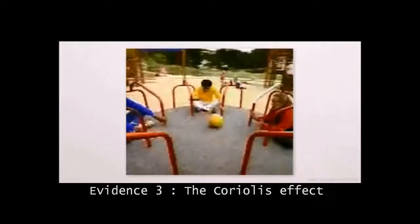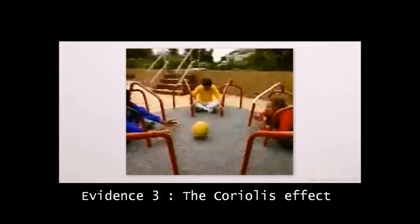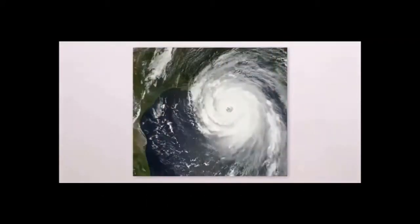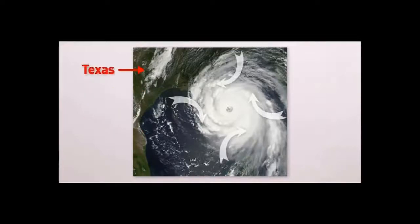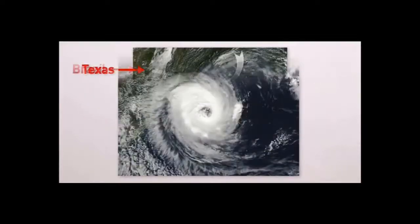Evidence 3: The Coriolis Effect means the freely moving things like wind and ocean currents or cyclones are deflected towards right only if you are in north of equator. If you are south of equator it will deflect towards left.